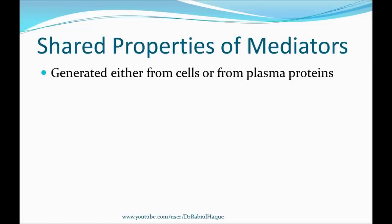Plasma-derived mediators are produced mainly in the liver and enter the circulation in an inactive form. They become activated only when required, using proteolytic cleavage. A second common property: mediators can be activated by different stimuli, including microbial products, substances released from dying or necrotic cells, and proteins of the complement, coagulation, and kinin systems.